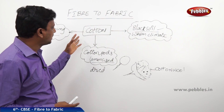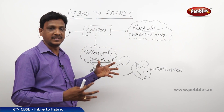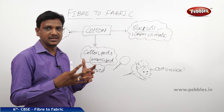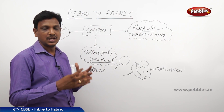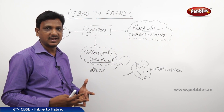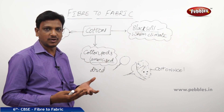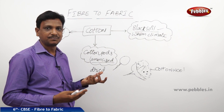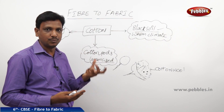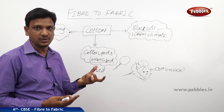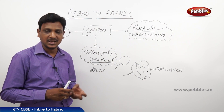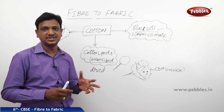So this is about cotton fibers — how we get them. Cotton fiber comes from the cotton plant, which generally grows in black soil and warm climate. The plant flowers and fruits; the fruits are lemon-sized and called cotton pods. Once dried, they burst open and we find the cotton wool. The seeds embedded in it are separated by hand in a process called ginning.